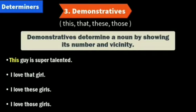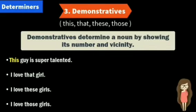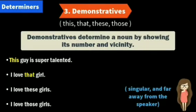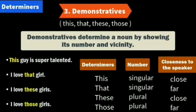'I love that girl. I love these girls. I love those girls.' 'This' — singular and close to the speaker. 'That' — singular and far away from the speaker. 'These' and 'those' indicate plural. 'These' means the noun is close, and 'those' means the noun is far away from the speaker.